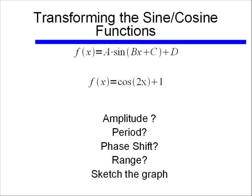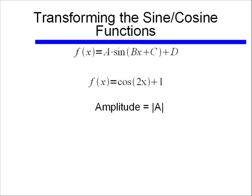The amplitude, the period, the phase shift, and the range will be just like it was with the sine function. We'll just need to remember what our basic cosine looks like, as opposed to our basic sine. But if we start off again with amplitude, we remember that the amplitude is the absolute value of a. Well it looks like in this case a is just equal to 1, so our amplitude is 1.